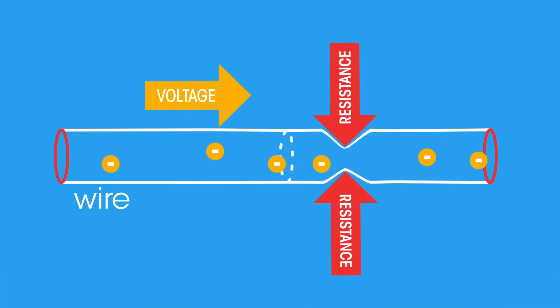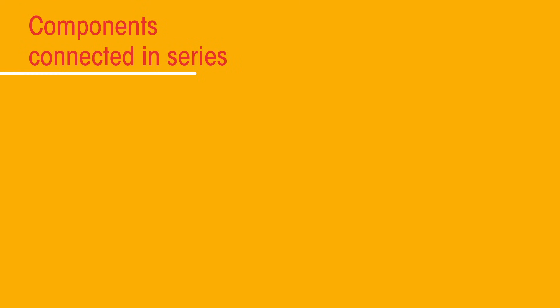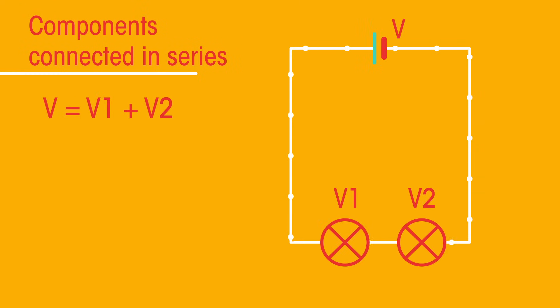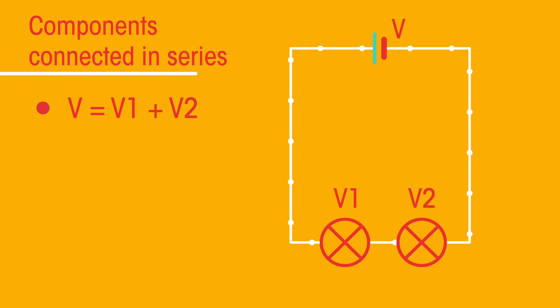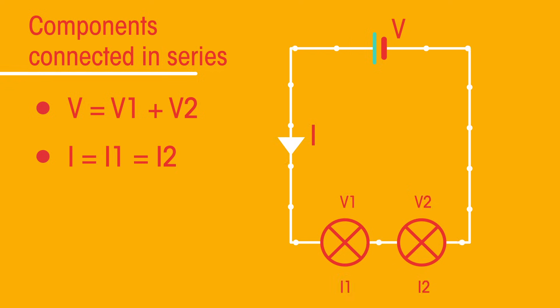For components connected in series, the total voltage or potential difference of the power supply is shared between the components. There is the same current through each component. The total resistance of two components is the sum of the resistance of each component.